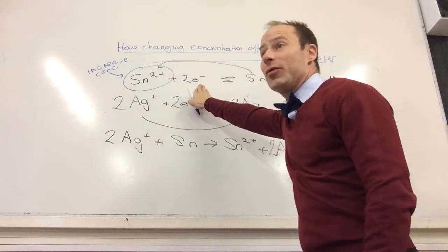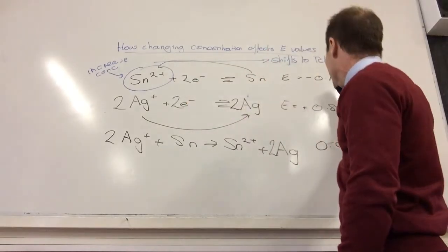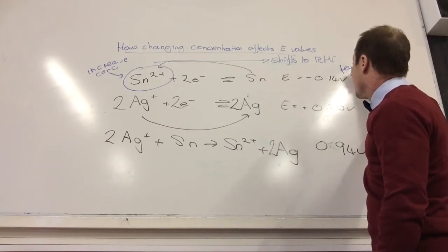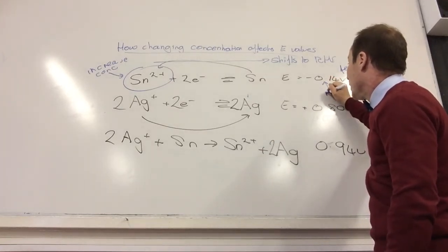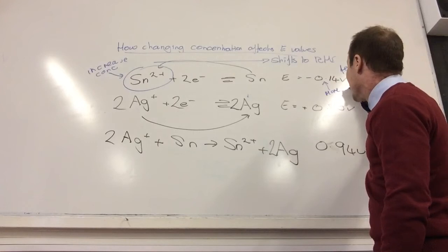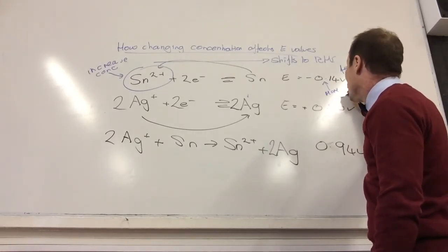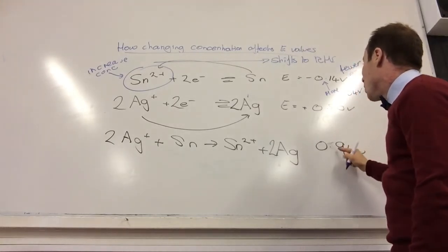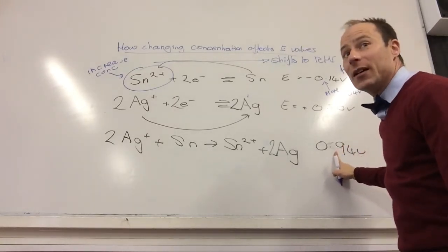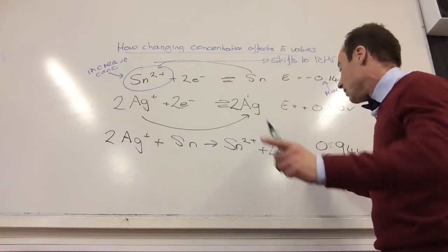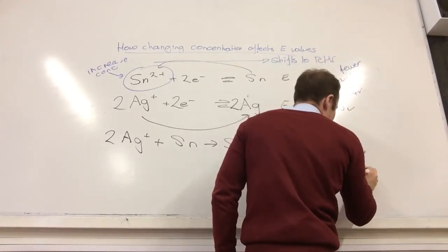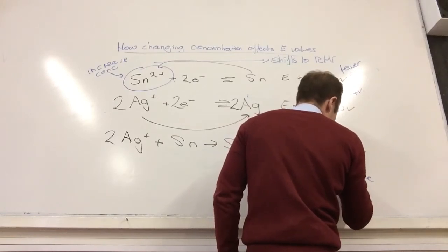This shifts to the right-hand side. What happens to the number of electrons therefore? So this becomes fewer electrons, which means this one becomes more positive. So let's pretend it now only is minus 0.04 volts. What happens to this number here? It becomes less positive. Yep. Well, this becomes less positive and less feasible.